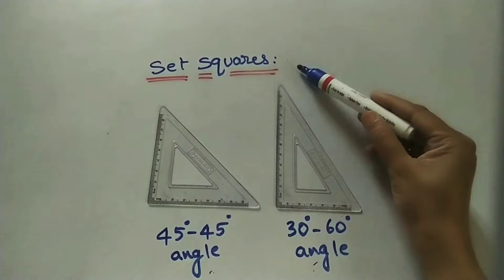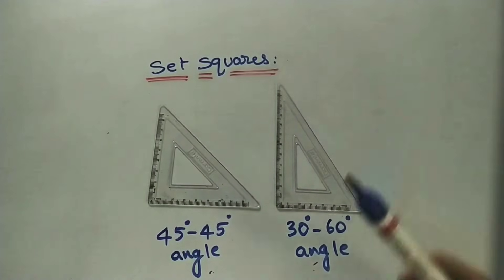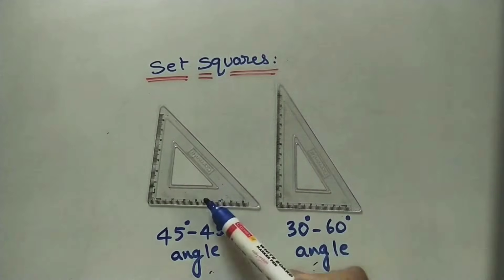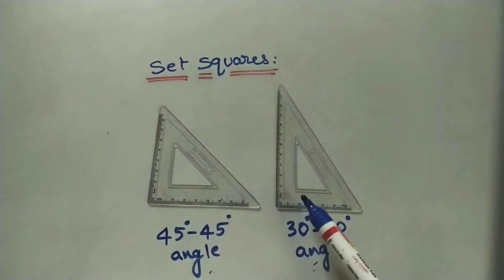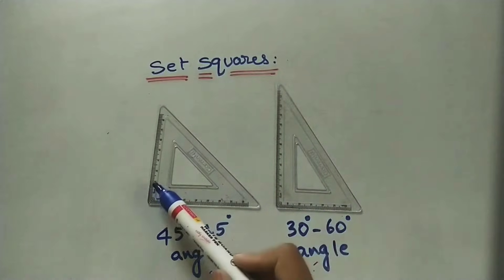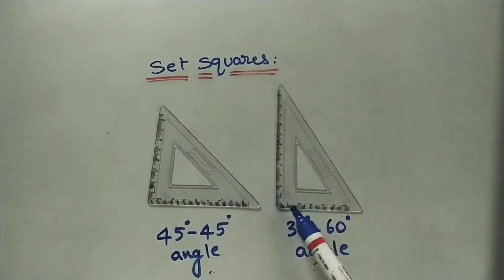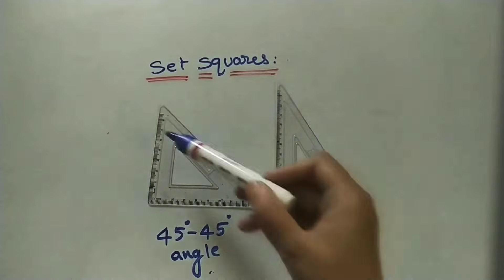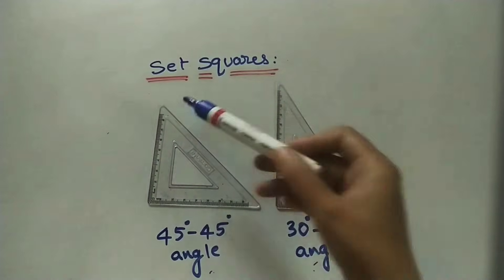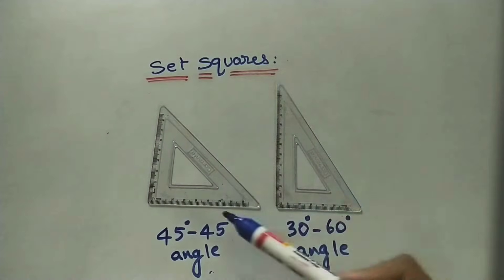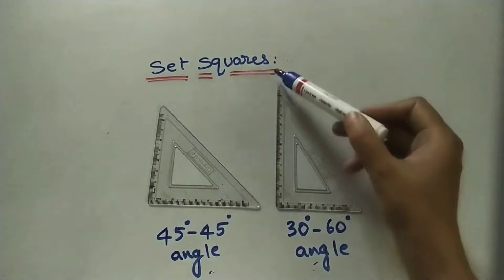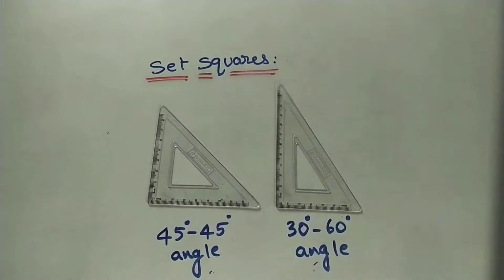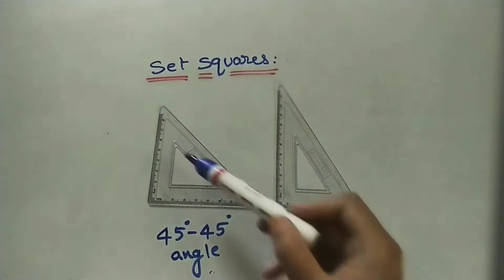Let us discuss about set squares. Set squares means these are a set of two right angle triangles. This is 90 degrees, called a right angle, and this shape is a triangle. A set of two right angle triangles is called set squares.